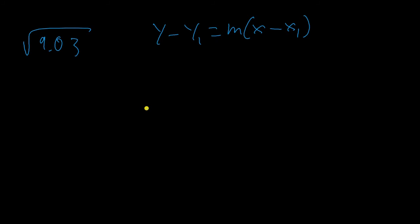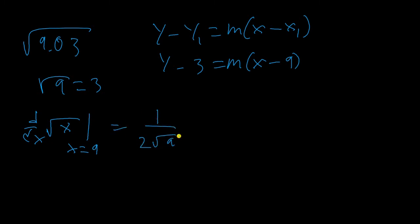So, we first need to choose a point close to 9.03 that we know the square root of. The closer it is, the closer the approximation will be. The obvious choice is 9, which we know the square root of. Plugging that into our form, we have y minus 3 is equal to m times x minus 9. All we need is the slope. To find it, we are going to take the derivative of the square root function and plug in the x value of the nearby point. So, the derivative of the square root of x at x equals 9. This is going to be 1 over 2 times the square root of 9, which is 1 over 6. So the slope is 1 sixth.